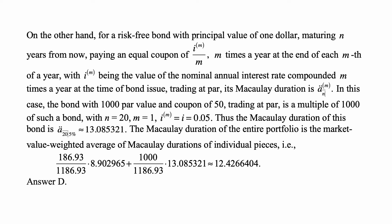The Macaulay duration of the entire portfolio is the market-value-weighted average of Macaulay durations of individual pieces. So that's 186.93/1,186.93 times 8.902965, that was the Macaulay duration of the annuity 15 piece, plus 1,000/1,186.93 times the 13.085321 that we just calculated. And that's approximately 12.426404, which is answer D.